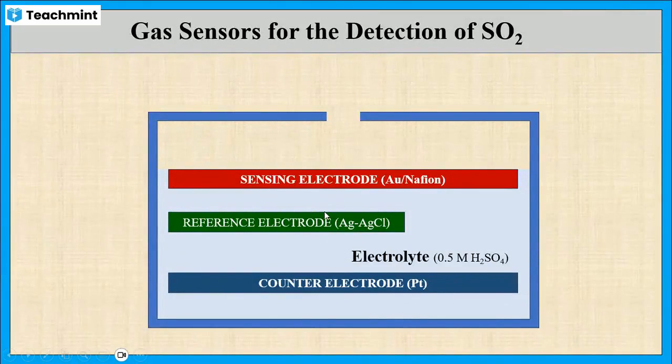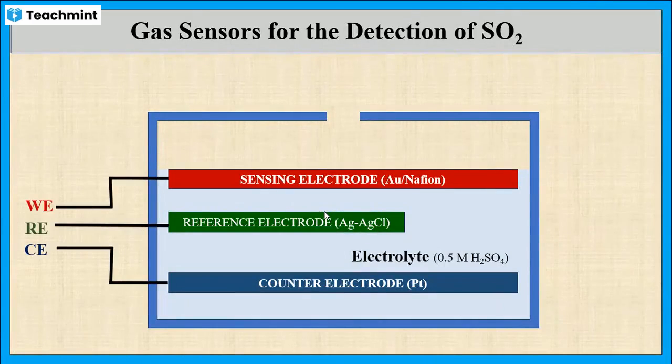The working electrode and the reference electrode are connected to a voltmeter, and these electrodes are connected to the counter electrode via an ammeter.